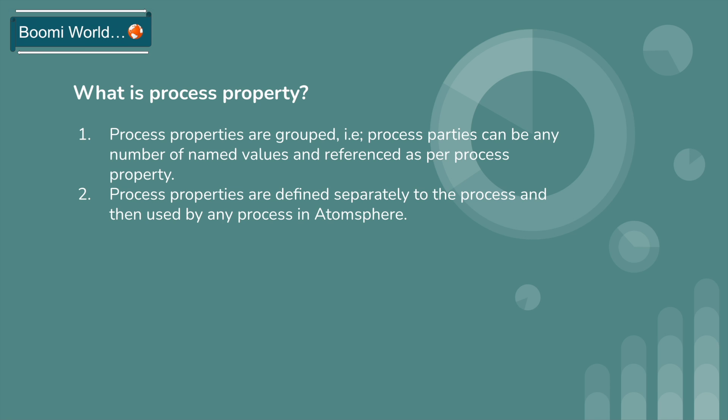What is process property? Process properties are grouped such that they can contain any number of named values and referenced as per process property. Process properties are defined separately and can be used by any process in the Atom sphere. You can configure multiple process properties in a single component and use that component wherever you want.